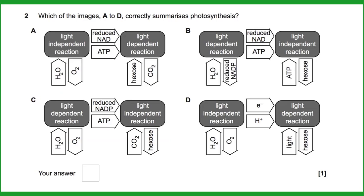Question two: which image correctly summarises photosynthesis? The easy way is to look for wrong answers. Options A and B refer to reduced NAD, which doesn't appear in photosynthesis. Only C correctly refers to reduced NADP — produced by the light-dependent reaction and consumed in the light-independent reaction. The light-dependent reaction also produces oxygen via photolysis, splitting water to produce electrons. The light-independent reaction takes in CO2 to make glucose, amino acids, and other products. The correct answer is C.